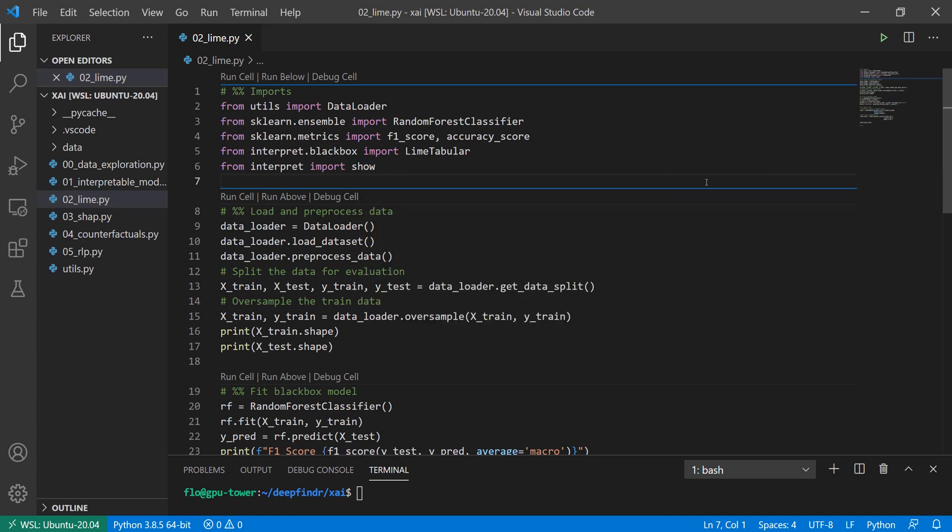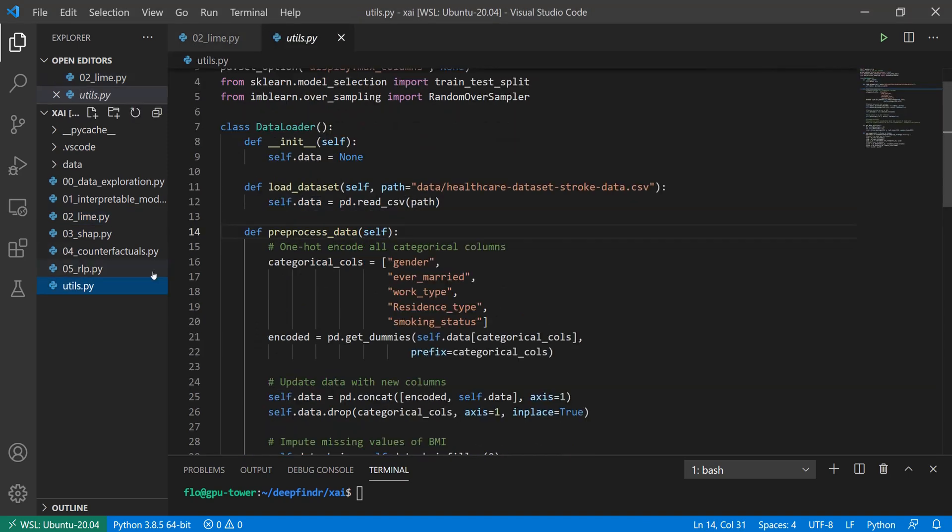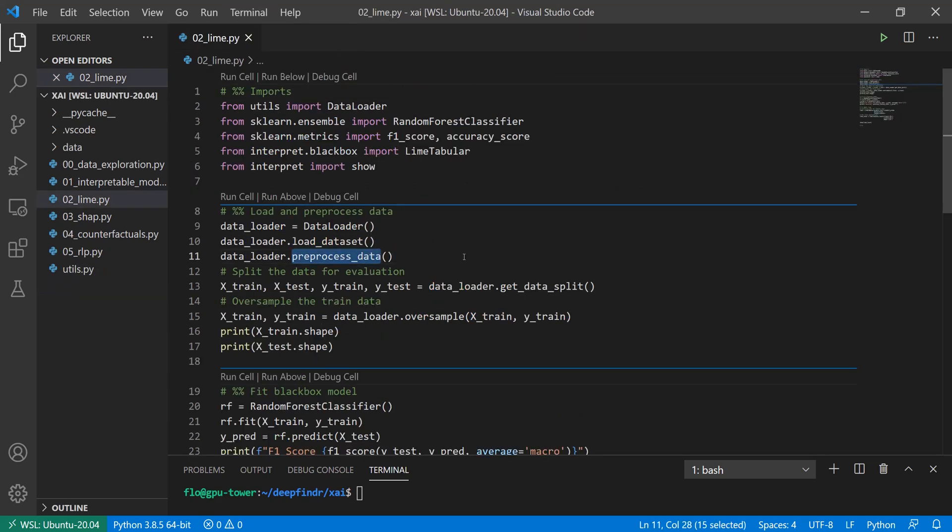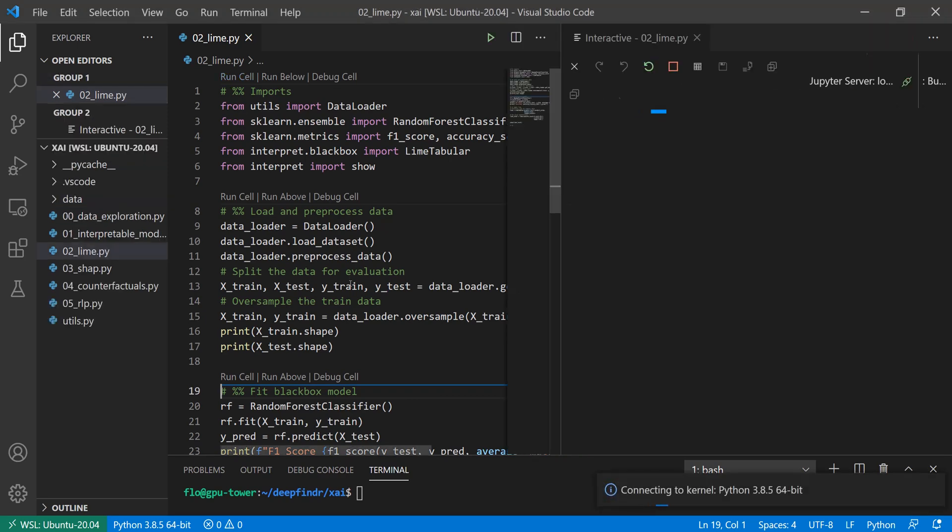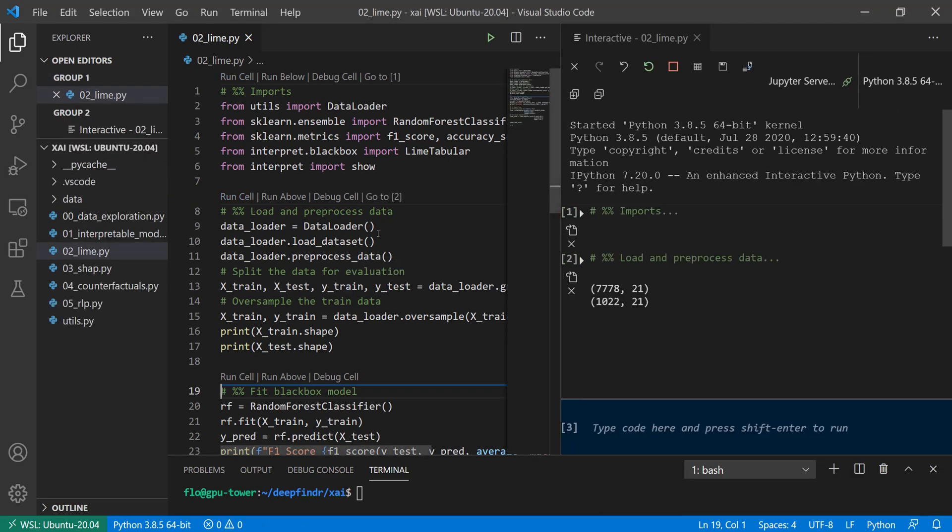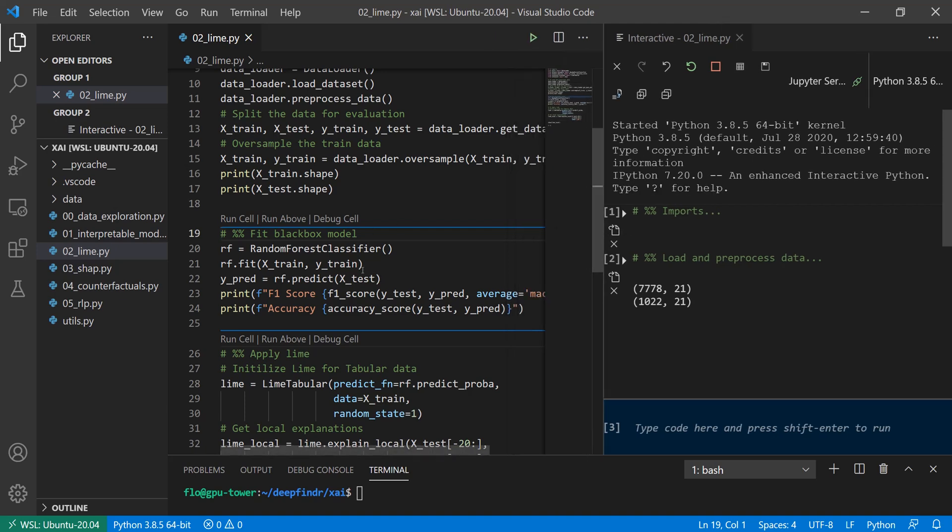So in the second cell, we load the dataset using this load_dataset function, which simply gets the data as CSV from pandas. And then we preprocess it using the preprocess function. Here we do some imputations and one-hot encodings. And after that, we simply split the dataset into 20% test data and 80% train data. And then we do some oversampling to ensure that our minority class gets more importance in our predictions. So let's run those first two cells. It's opening our Jupyter notebook.